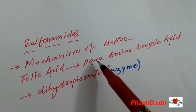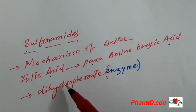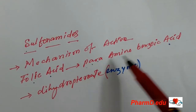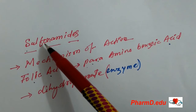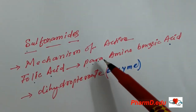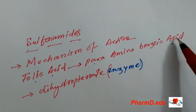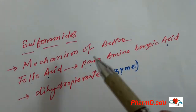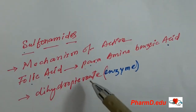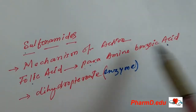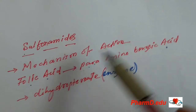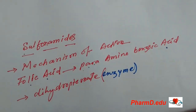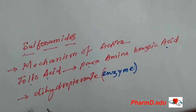The enzyme dihydropteroate synthase is highly essential for folic acid synthesis. It normally attaches to para-aminobenzoic acid to help in the synthesis of folic acid. However, because sulfonamides have a structurally analogous structure to para-aminobenzoic acid, the enzyme cannot work properly. In place of para-aminobenzoic acid, sulfonamide comes in, so the enzyme cannot synthesize folic acid.